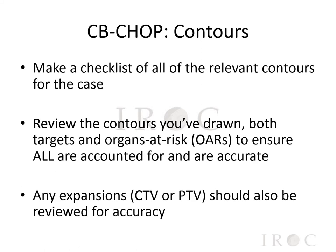The first C in CBCHOP stands for contours. You should make a checklist of all of the relevant contours for the case. Review the contours you've drawn — both targets and organs at risk — to ensure that all are accounted for and accurate. Any expansions, for example a CTV or PTV, should also be reviewed for accuracy. Remember that a dosimetrist can only plan a case using the information they have — if something is missing, the plan could overdose or underdose an important structure.